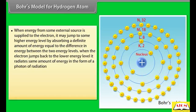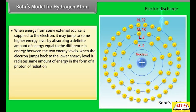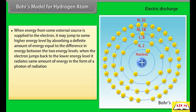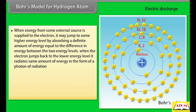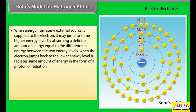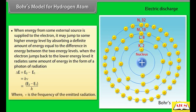When energy from some external source is supplied to the electron, it may jump to a higher energy level by absorbing a definite amount of energy equal to the difference in energy between the two levels. When the electron jumps back to the lower energy level, it radiates the same amount of energy as a photon. ΔE = E₂ − E₁ = hν, so ν = (E₂ − E₁)/h, where ν is the frequency of the emitted radiation.